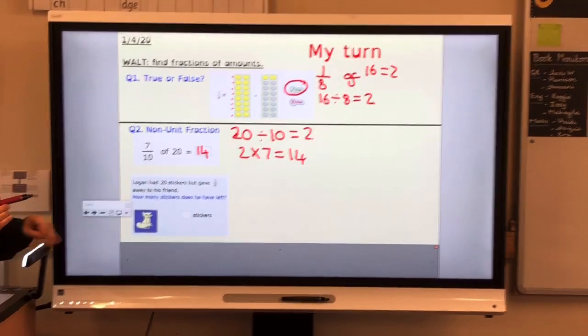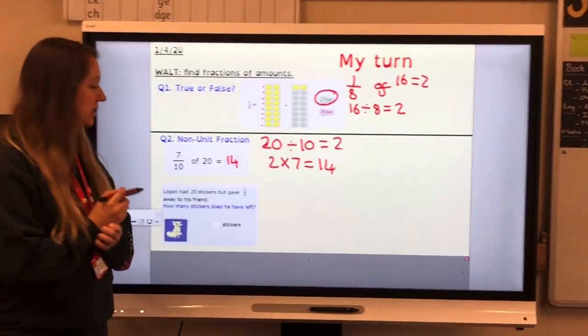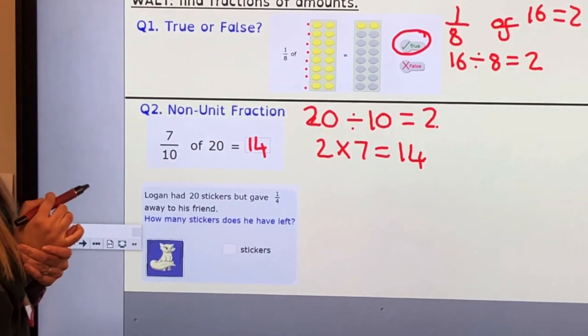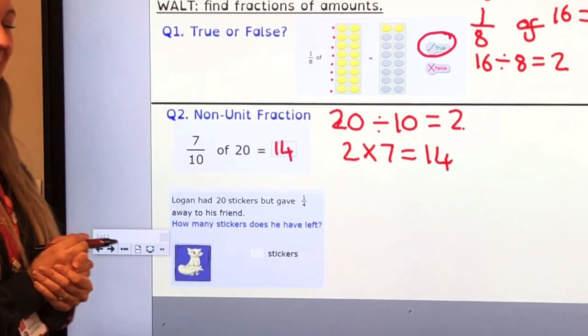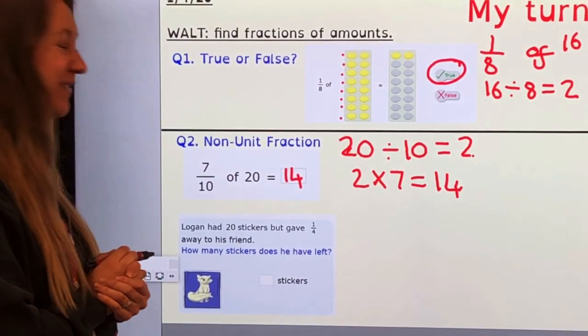You then might have a slightly trickier word problem. Read the question very carefully. Logan had 20 stickers but gave one-quarter away to his friend. How many stickers does he have left?